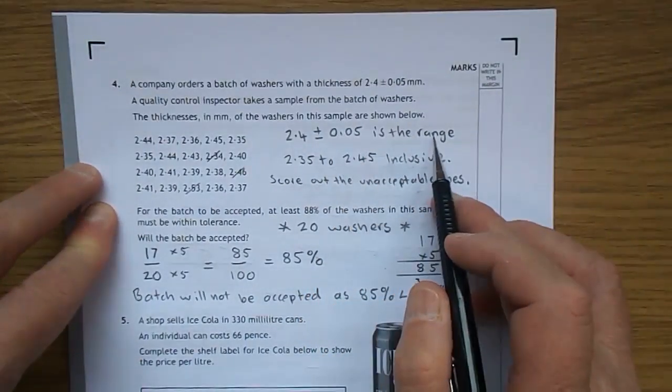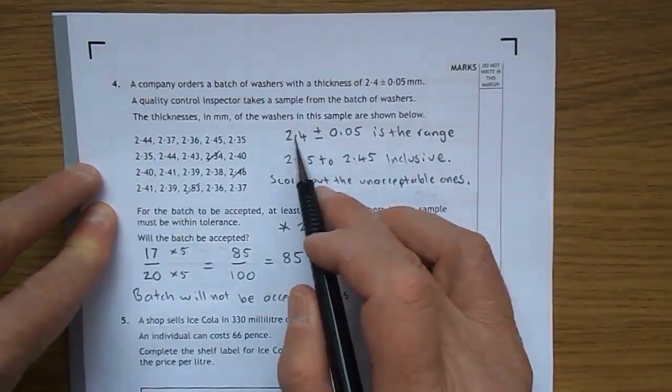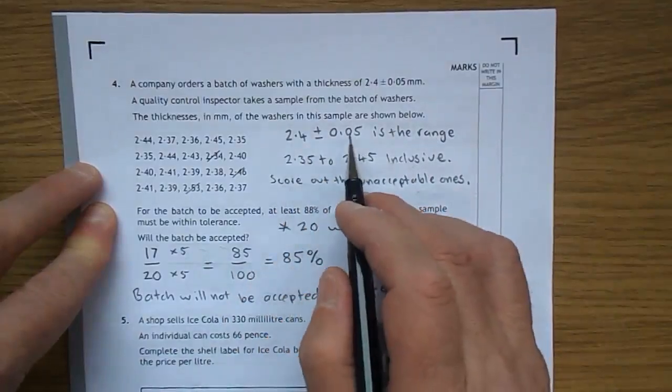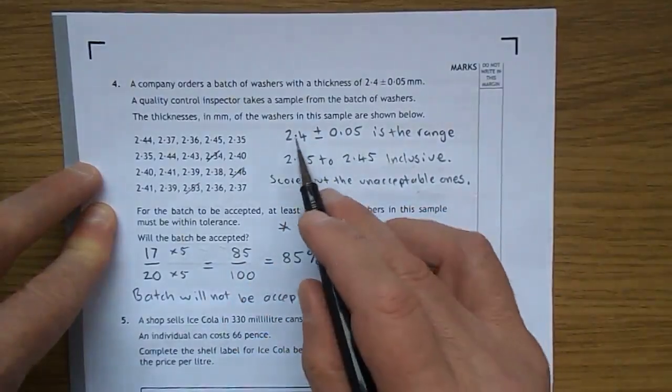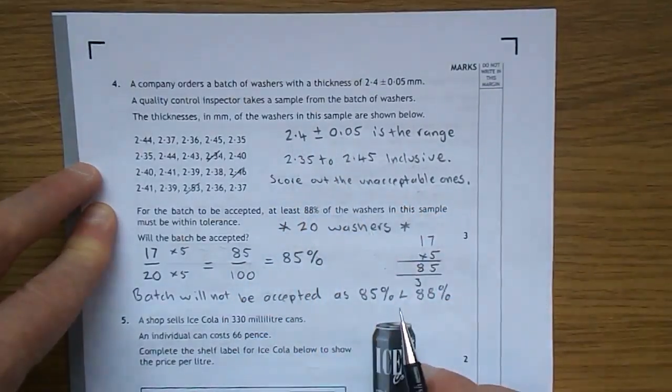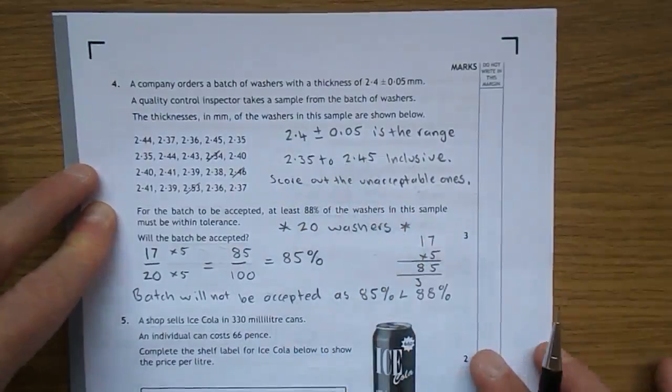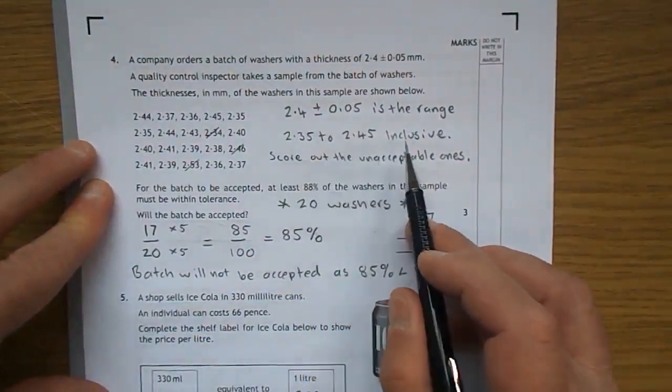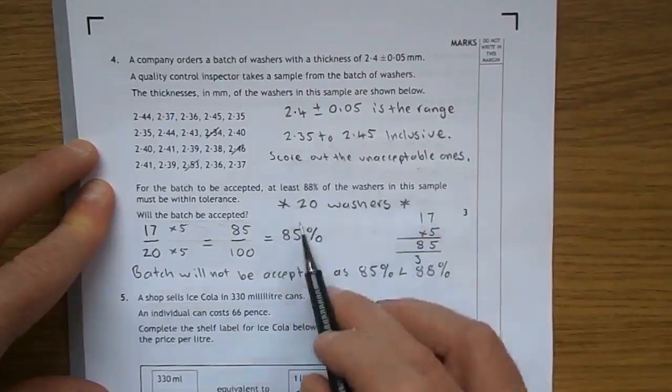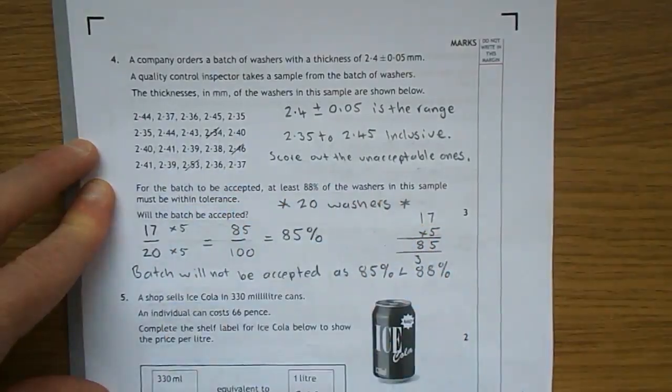Well, it's a range of numbers from 2.4 take away 0.05, that's 2.35, to 2.4 plus 0.05, which is 2.45. So 2.35 to 2.45 inclusive means you actually include these numbers, if they're actually there, they're okay.